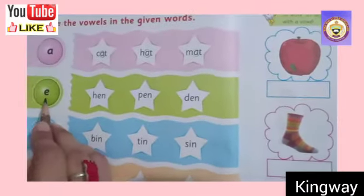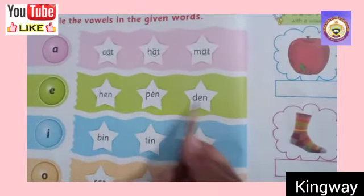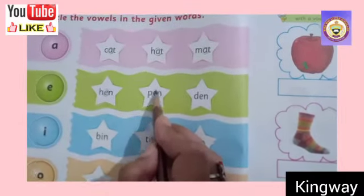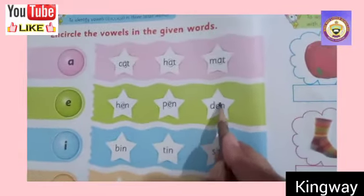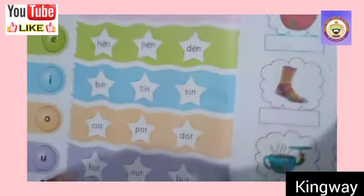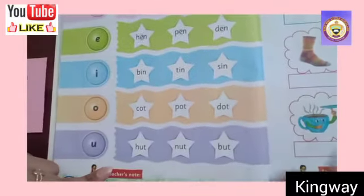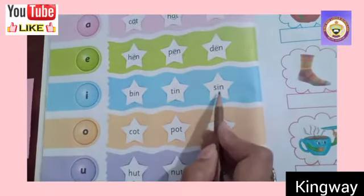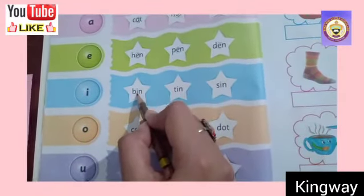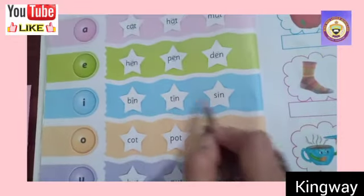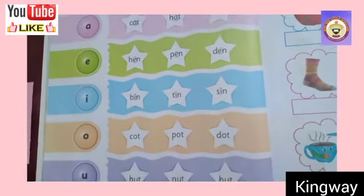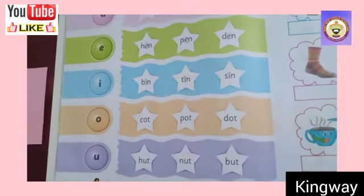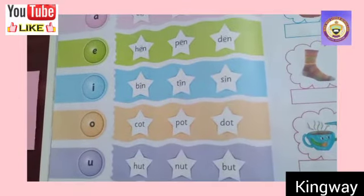Next, vowel E. Words like hen, pen, den — the vowel E is used in the middle, and we will circle it in the middle. You can circle it with a color pencil or pencil. For vowel I: bin, tin, sin — we will circle the I in the middle. You will similarly find and circle the vowels O and U in the middle, and read out the words.